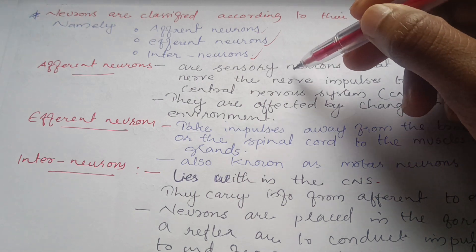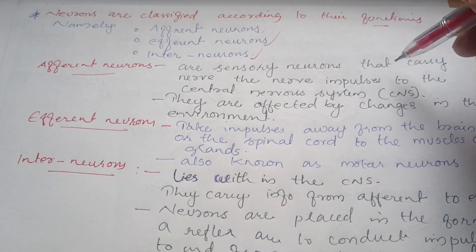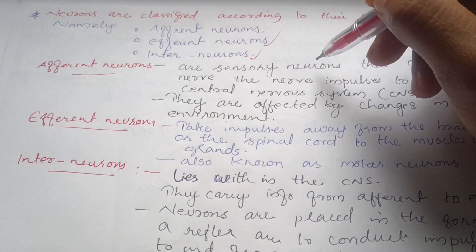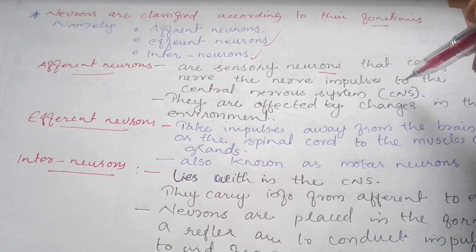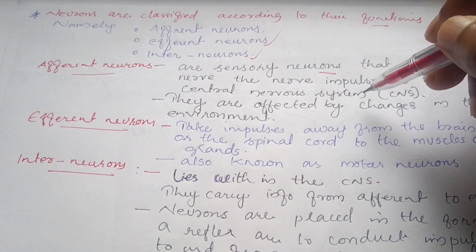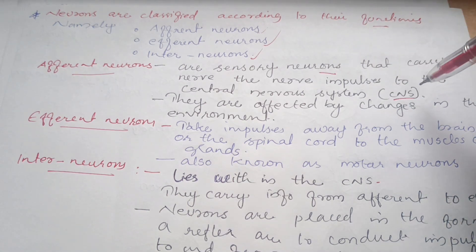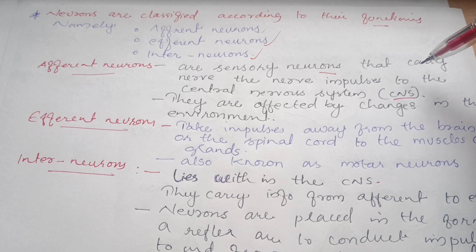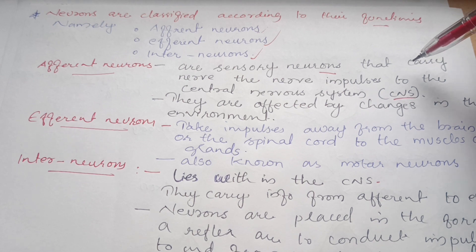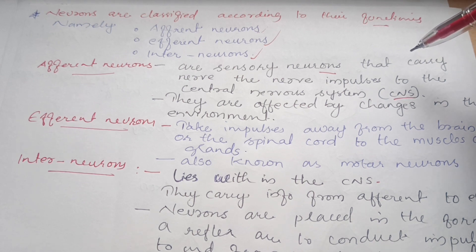Afferent neurons are sensory neurons that carry nerve impulses to the central nervous system. These are also known as sensory neurons, and they bring information from the environment into the central nervous system.